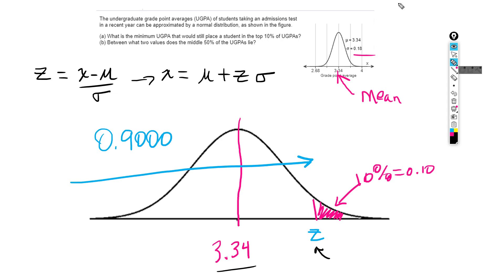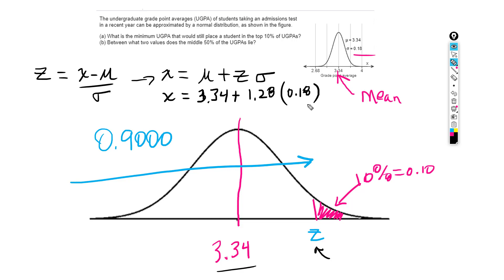I get z = 1.28, so I come over here and plug in my mean of 3.34, then add 1.28 times my standard deviation, throw it all into a calculator, and I get 3.57. That makes sense because it's higher than the mean and I'm to the right of the mean.